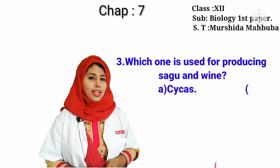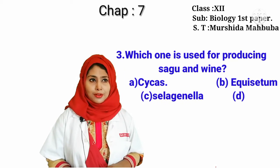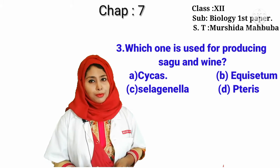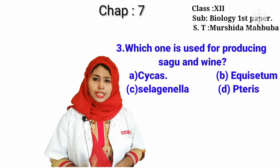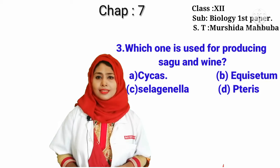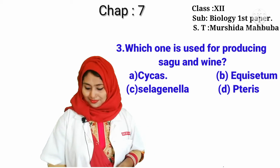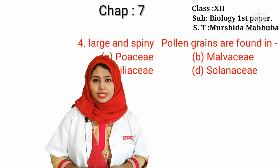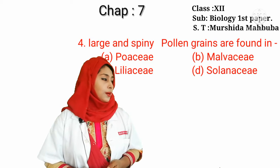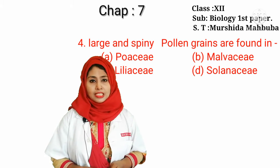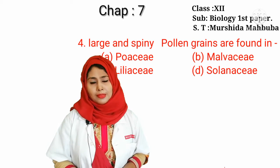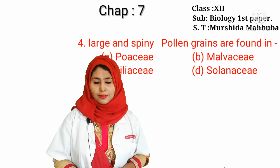Our next question is: which one is used for producing sago and wine? You have to memorize the economic importance of Cycas. If you memorize those portions, you can easily answer it. The answer is Cycas. Our next question is: large and spiny pollen grains are found in Poaceae, Malvaceae, Liliaceae, or Solanaceae?